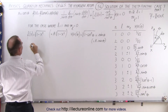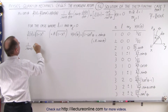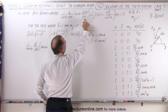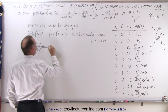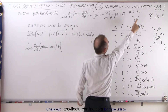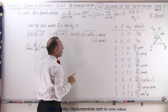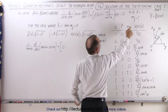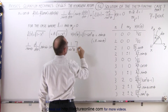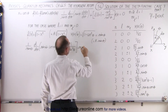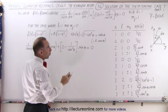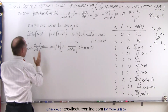Let's plug it into the differential equation. We have 1 over sine of theta times d/dθ of sine of theta, and the derivative of sine gives cosine of theta. Then we have plus L times L plus 1 — since L equals 1, that's 1 times 2 which gives 2 — minus M sub L squared over sine squared of theta. Since M sub L equals 1, that's 1 squared divided by sine squared of theta, all multiplied by the function, which is sine of theta, and that equals 0.